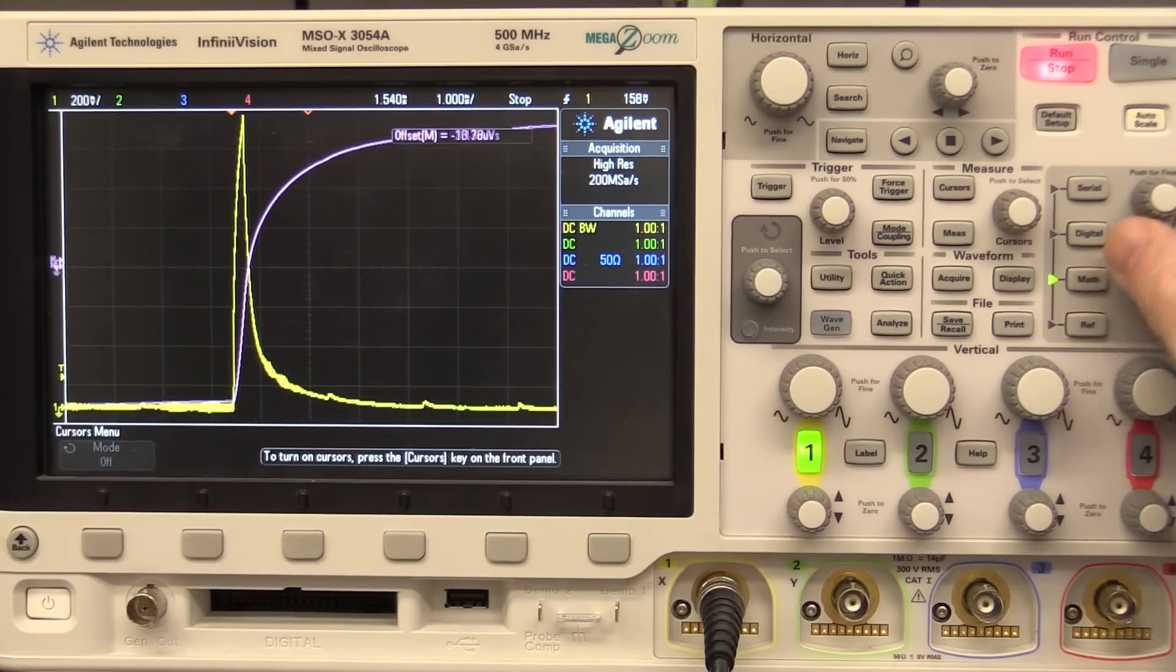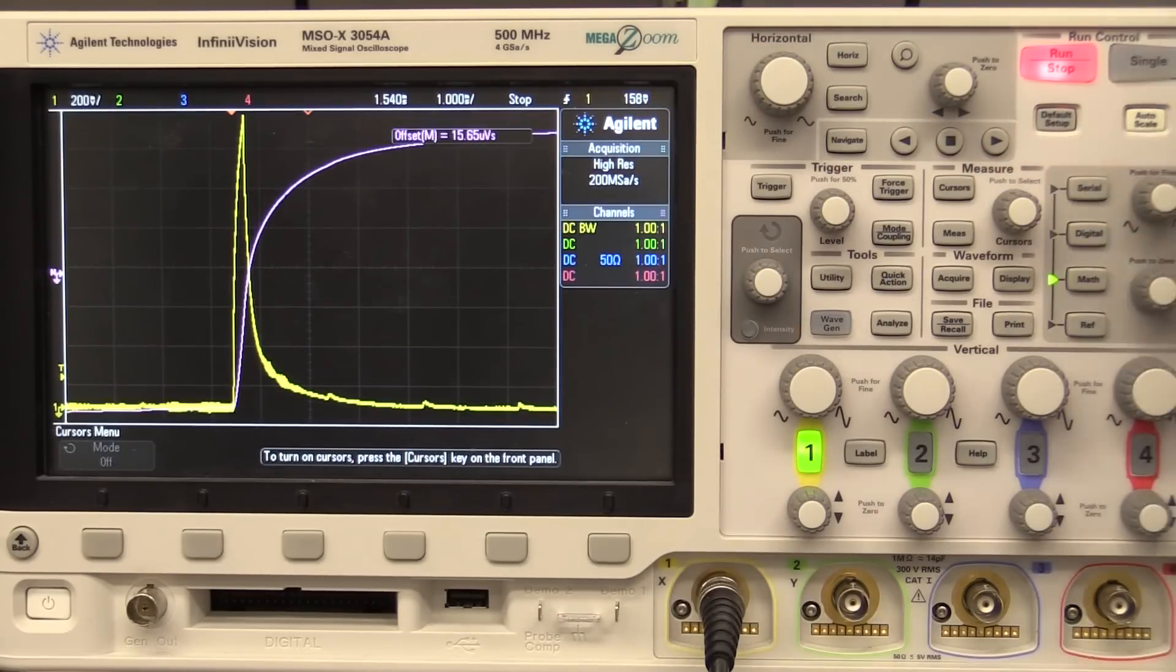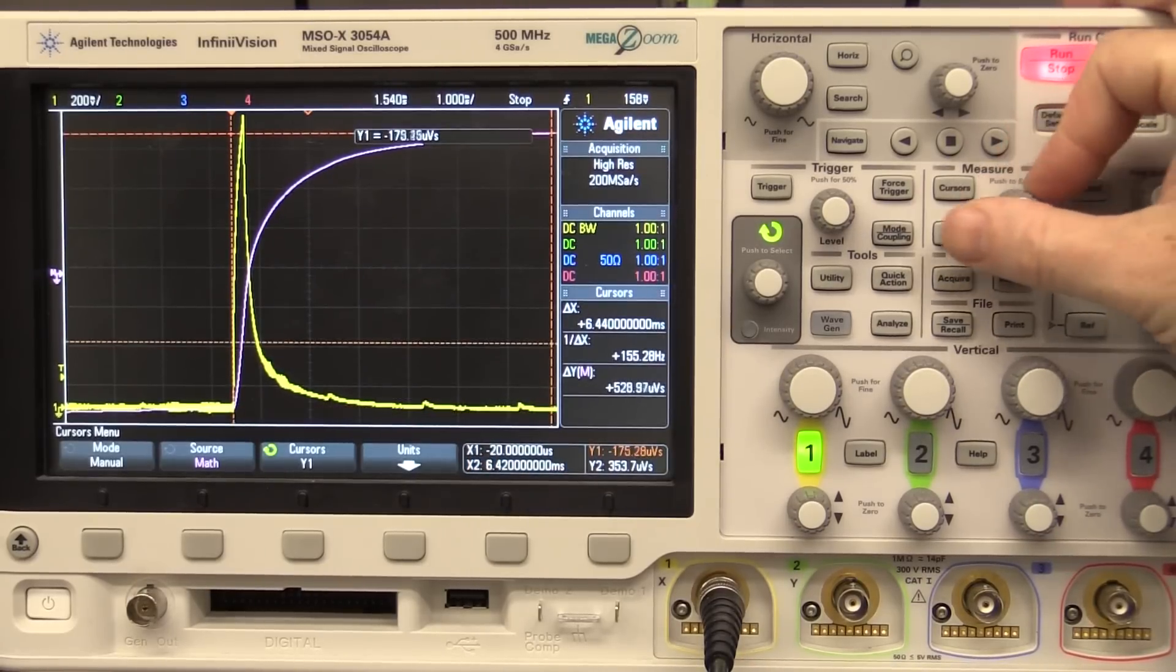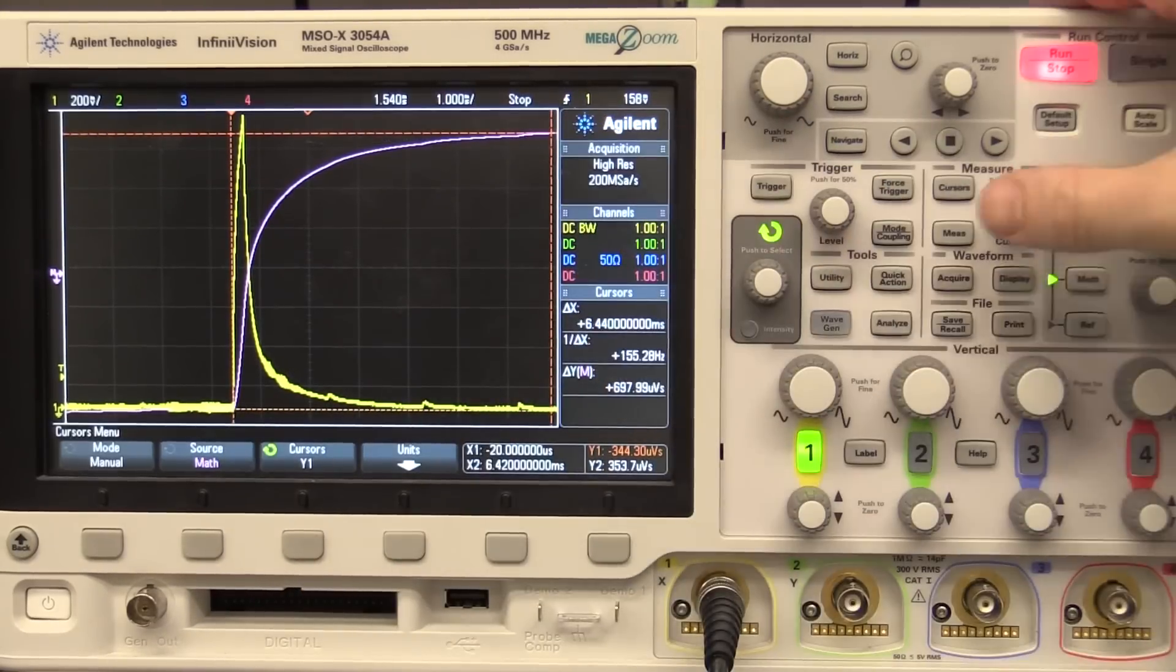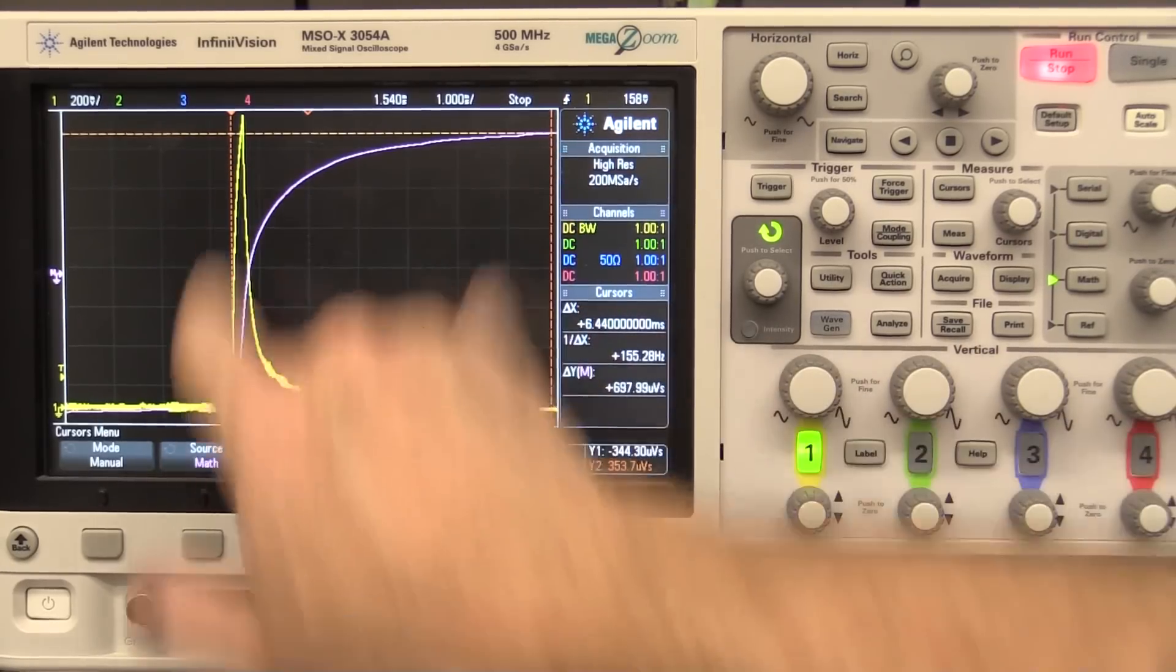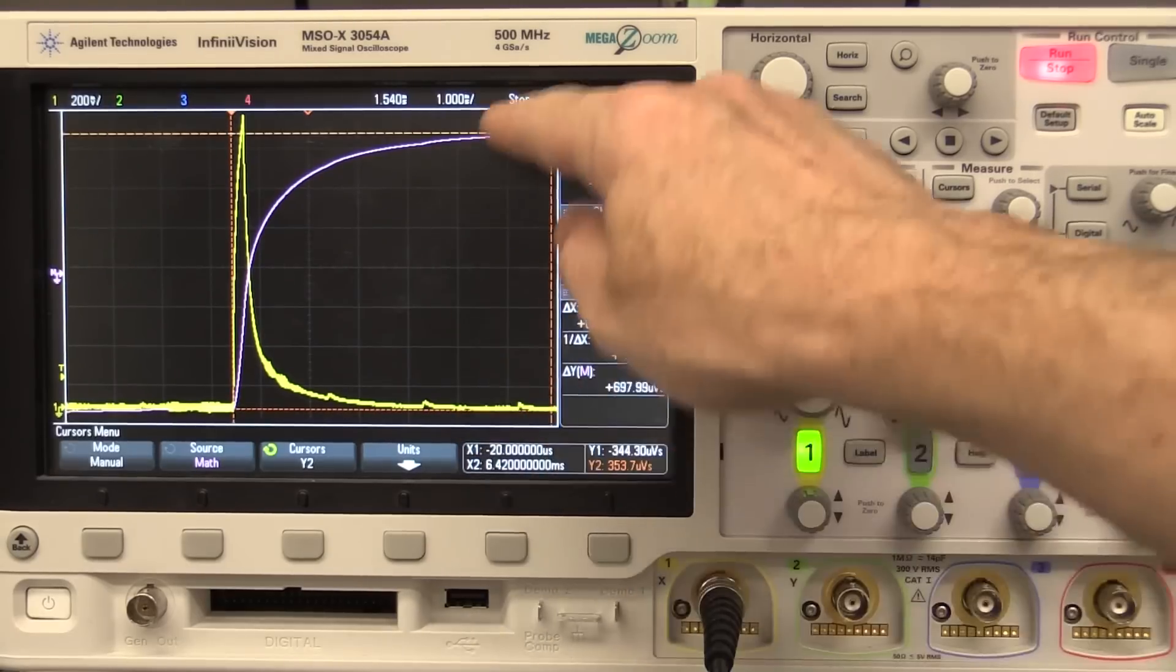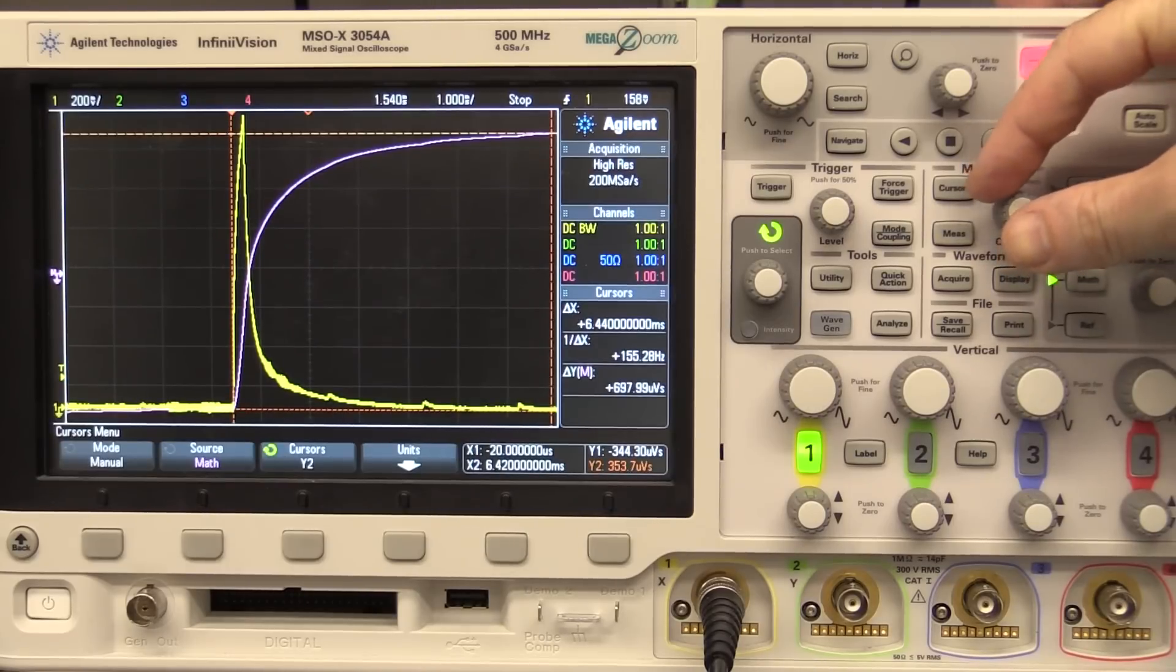So we can of course just move that up manually and just count the number of divisions until we get to that maximum value we want there. But hey, this is a modern scope, we can turn on cursors and we can go into Y here and we can set our Y cursor right down to the bottom there. That's where it starts and then we want the peak value right up the top here. So Y2, there's our second cursor value. So we want it over that particular time period there. We don't have to worry about the X1 and X2 cursors, that just gets us the difference there. But here is our value, Delta Y between those two values, i.e. that peak value up there. 697.9 microvolts seconds. Hey, let's round it up to 700 microvolts seconds, shall we?